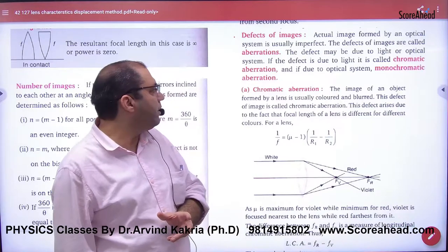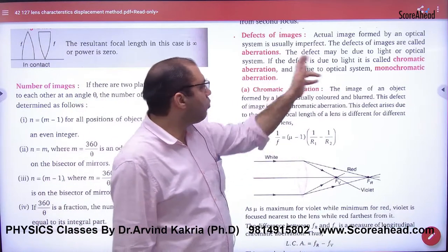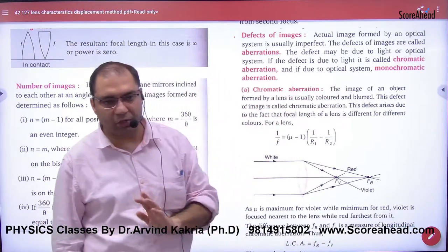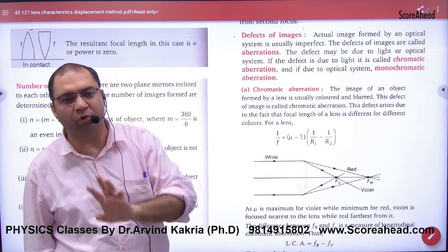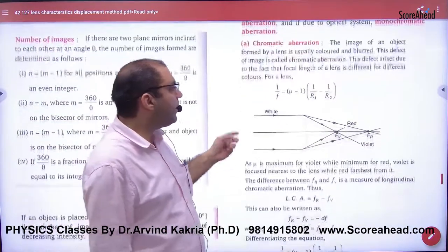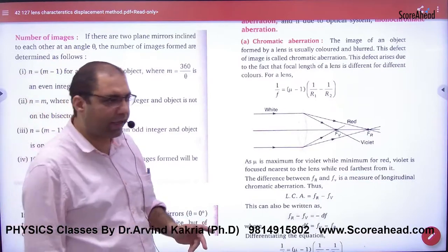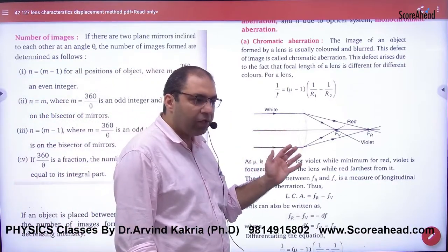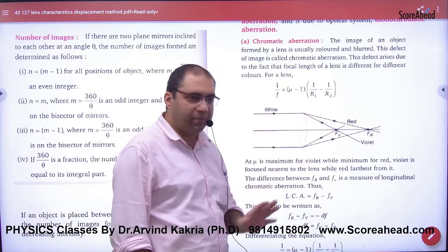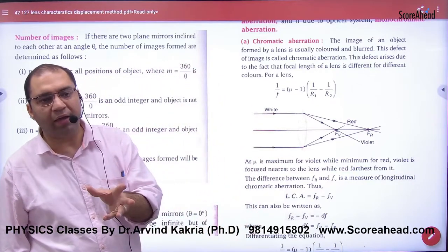There are two types of aberrations: chromatic and monochromatic. First of all, chromatic aberration is color-related. When white light passes through a thick lens, it gets split into seven colors.